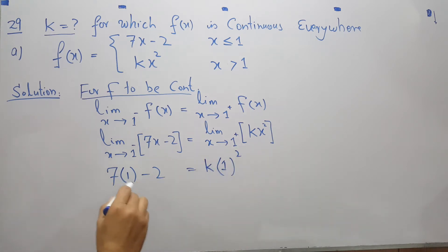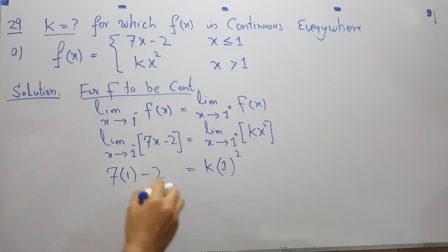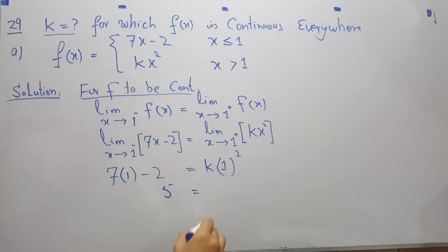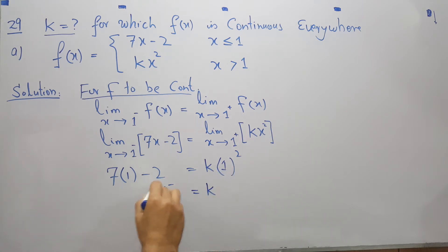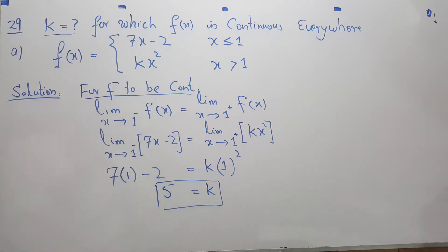Substituting the limit value, on the left side 7 times 1 is 7 and 7 minus 2 gives us 5, and on the right side 1 squared times k is k. So that gives us k equals 5. When k equals 5, the function is continuous everywhere.